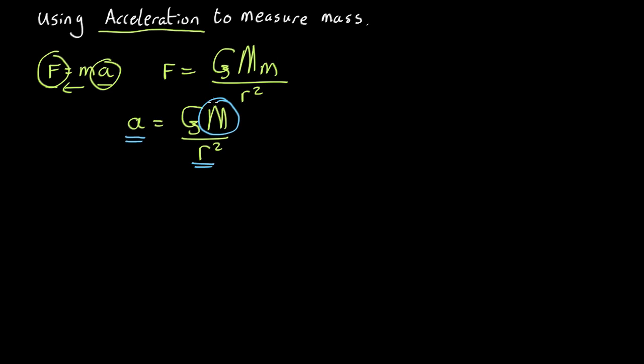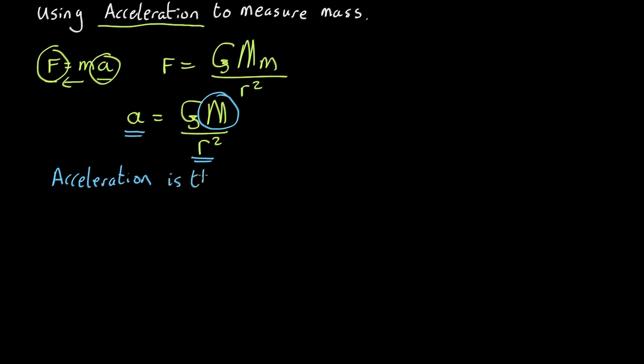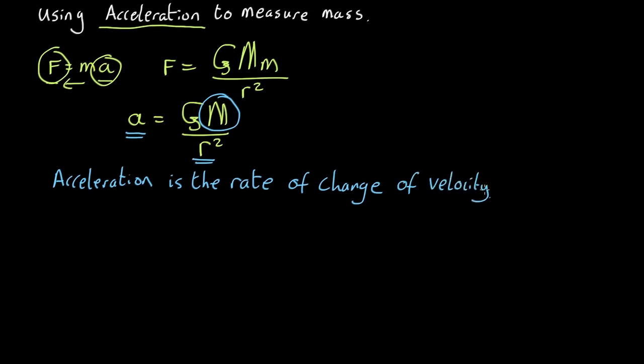Okay. But how do you work out the acceleration of something in deep space? Well, what is acceleration? Acceleration is the rate of change of velocity. So what that means is, whenever we see something with its velocity changing, then there must be an acceleration, and therefore there must be some mass nearby. And if we can see how much the velocity is changing, that will tell us how big the mass is.